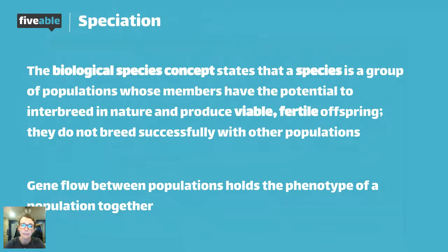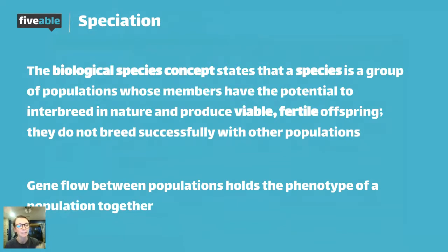If you are the same species as another organism, you can mate and produce offspring that are viable — meaning living and capable of life — and fertile, meaning capable of reproduction. If you can get with another organism and make babies that are living and capable of reproduction, then you are the same species. That is the biological species concept. Conversely, if two organisms try to mate and are incapable of producing offspring that are alive and fertile, then they are not the same species.